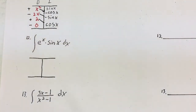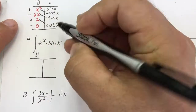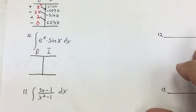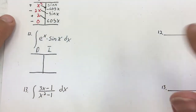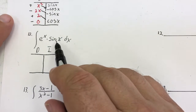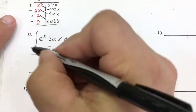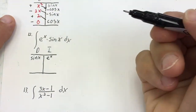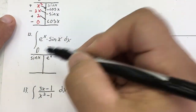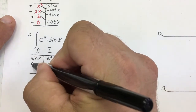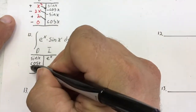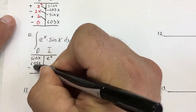This one is a little bit more involved. Once again, I'm going to find derivatives and integrals. I'd rather find the derivative of sine and the integral of eˣ. So I'm going to put sine x over here and eˣ over here. The derivative of sine x is cosine x, and the derivative of cosine x is negative sine x.